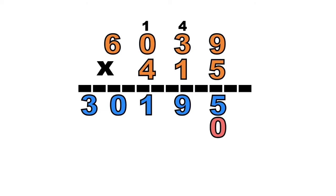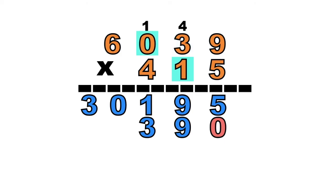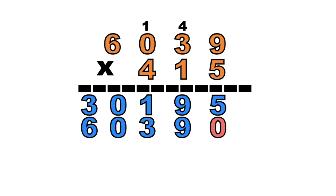Don't forget to write your imaginary 0. So let's have 1 times 9 equals — that is 9. How about 1 times 3 — it's 3. How about 1 times 0? It's 0. 1 times 6 equals 6. So we can now proceed to the last digit of the second factor, which is digit 4. But before that, let's write 2 imaginary 0s.